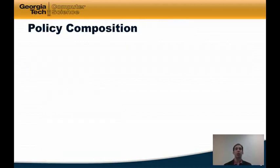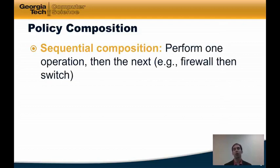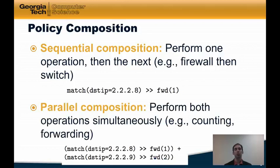Policy composition allows the programmer to write more complex policies by composing simpler ones. As we discussed in the previous lesson, there are two types of composition. Sequential, which performs one operation followed by the next, such as matching on a particular destination IP address and then sending the result to a forwarding policy which forwards on a particular output port. And parallel composition, which performs both operations simultaneously. Here's an example that forwards packets out one output port or another depending on the value of the destination IP address — this operation is simply a parallel composition of two other policies, each of which use sequential composition.